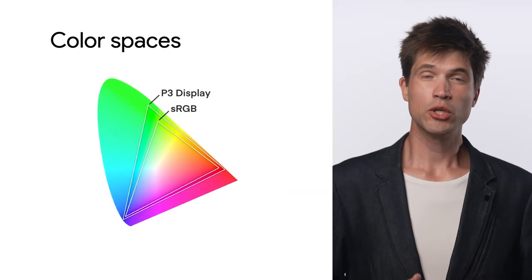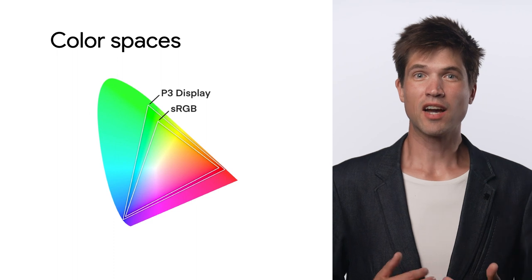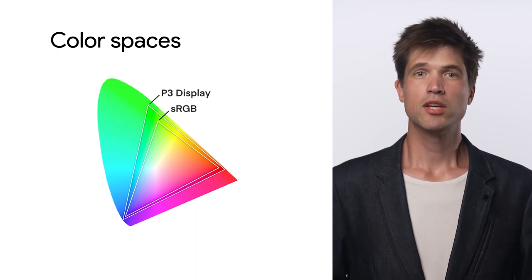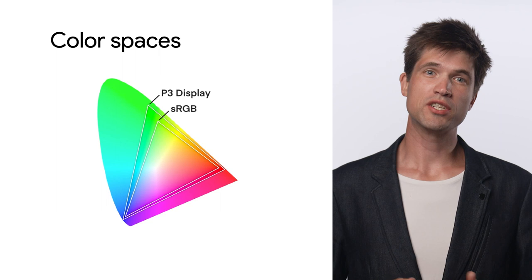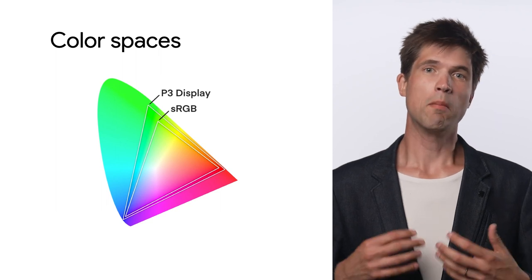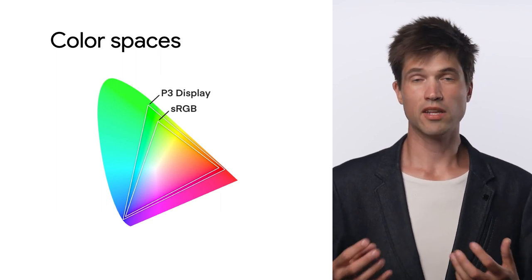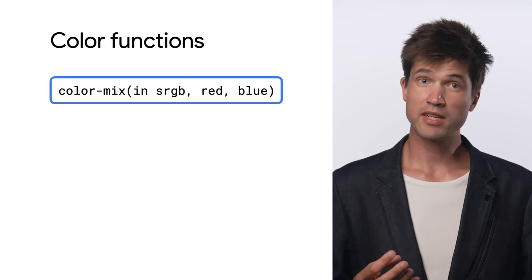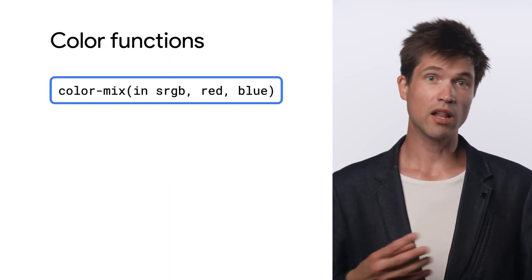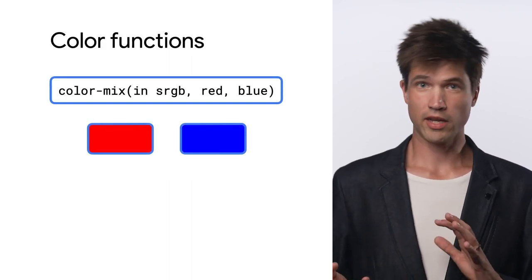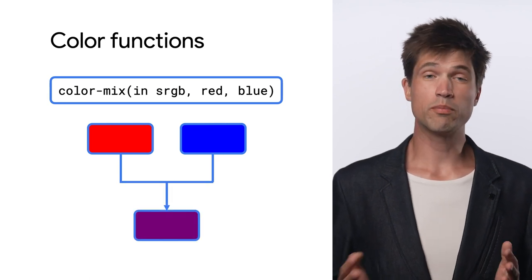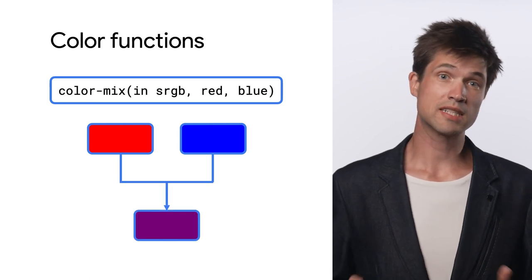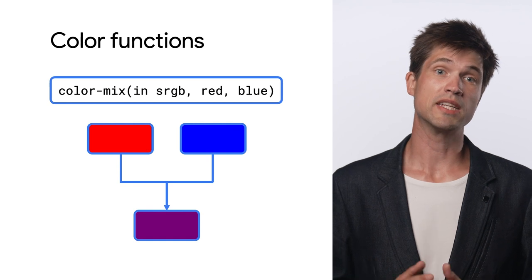The web is also getting new color spaces and color functions in CSS. Support for new color spaces will make it possible to take advantage of wide gamut displays that can show more vibrant colors and gradients than RGB. New functions like ColorMix add a convenient way to mix two colors, like red and blue, to get purple. This has long been possible with preprocessors like Sass and is now becoming native to CSS.